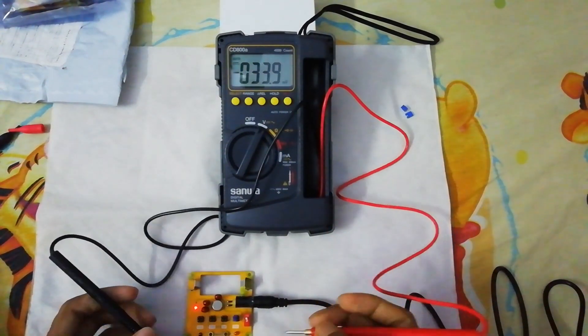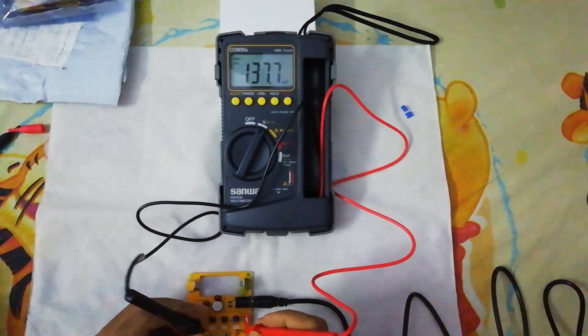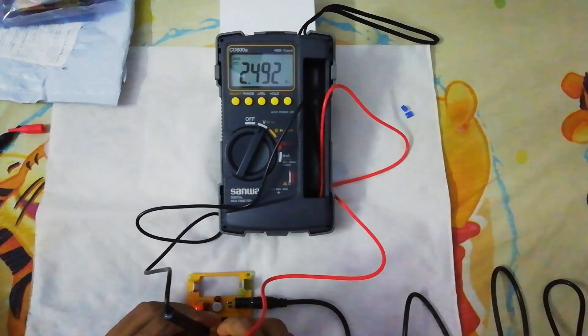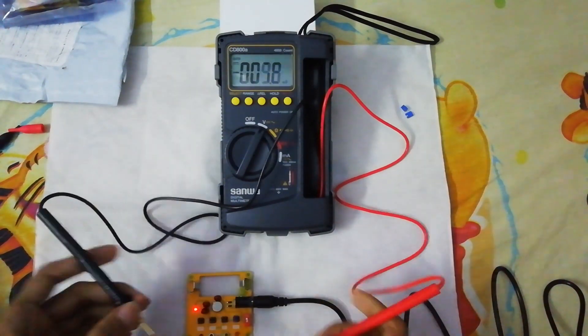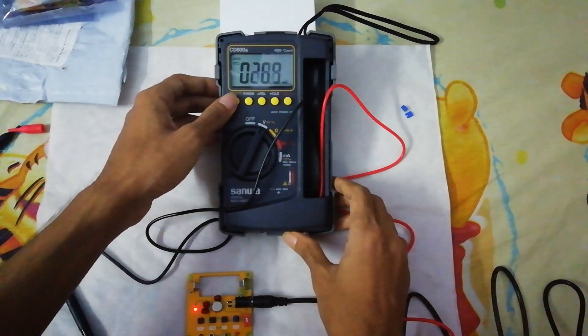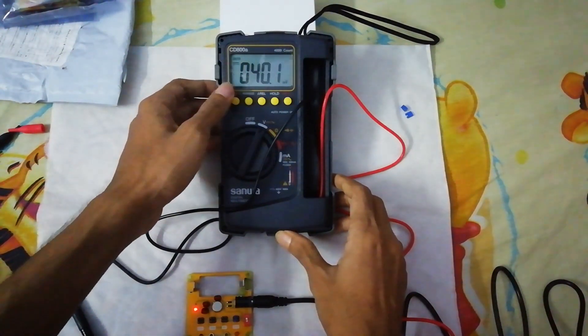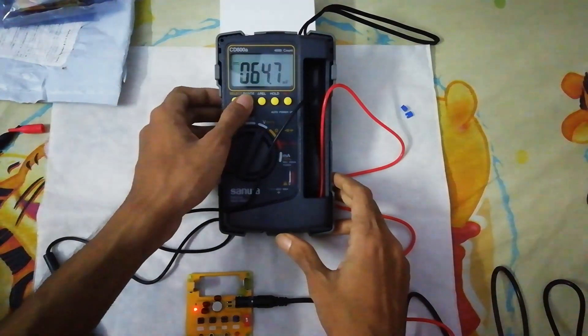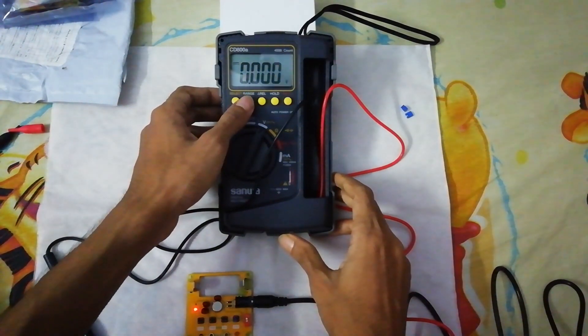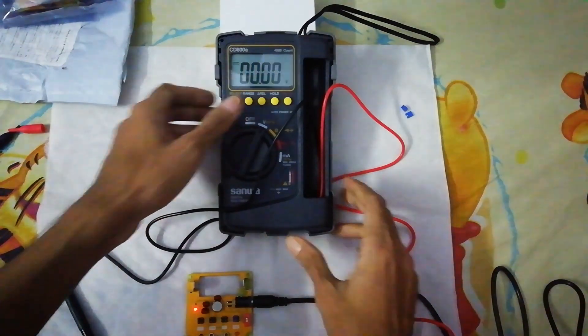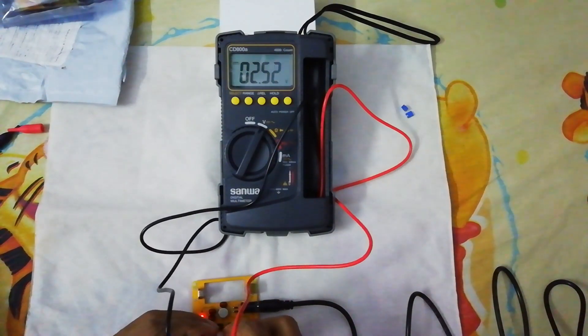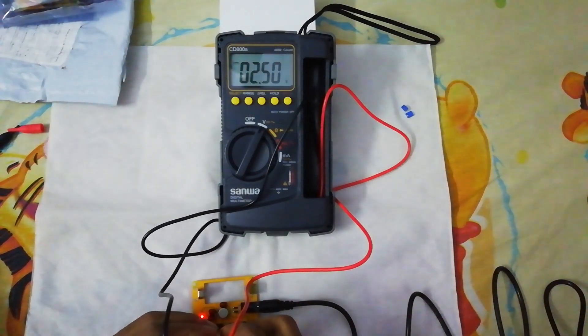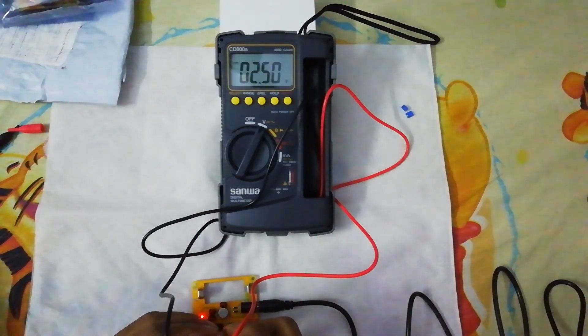So for 2.5 volt we have 2.49. I want to notice you that when I switched it to manual range, for 40 volt range it will show 2.50. It's very accurate in the manual range.